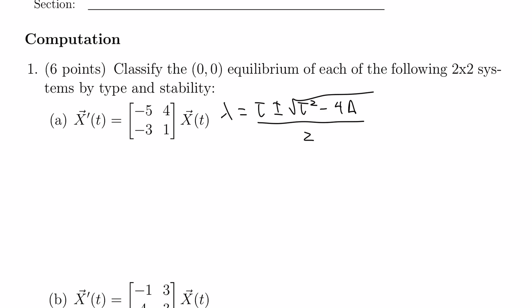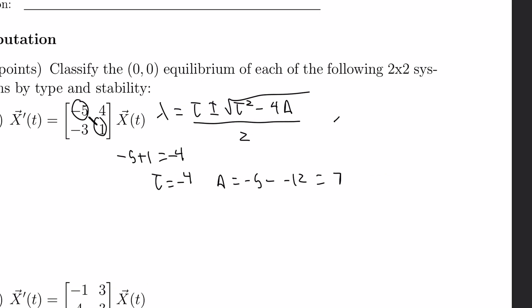First thing I need to do is find tau — the trace — so you add the diagonal entries: negative five plus one equals negative four, so tau equals negative four. Then we find the determinant: negative five times one equals negative five, minus negative three times four which is negative twelve, giving us twelve plus negative five, which equals seven. Plugging into the equation: lambda equals negative four plus or minus the square root of tau squared — which is sixteen — minus four times the determinant, which is seven, all over two.